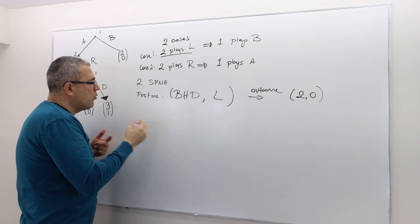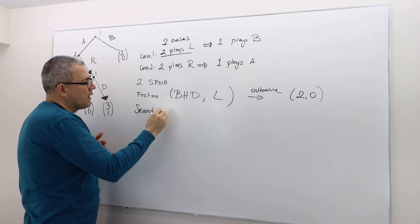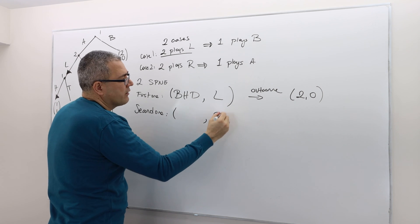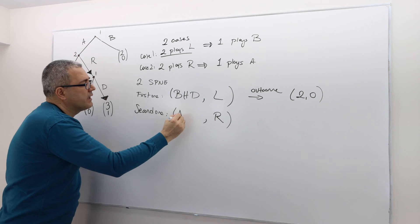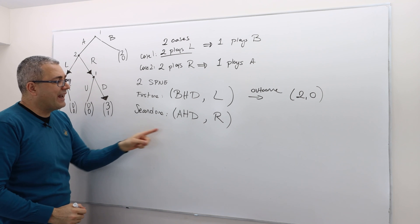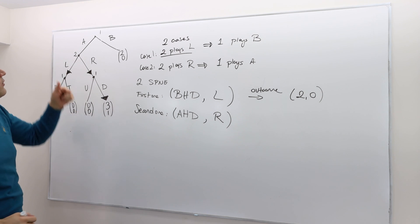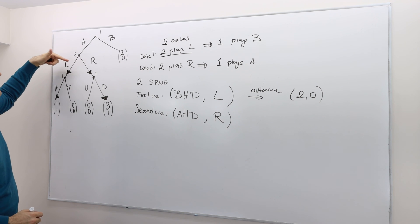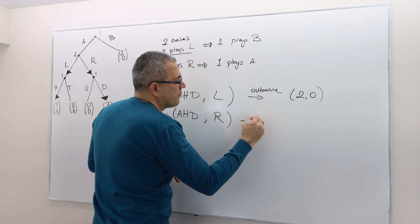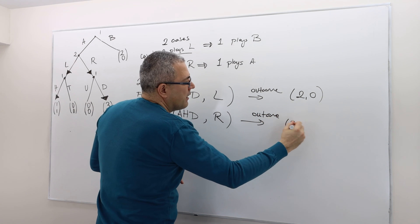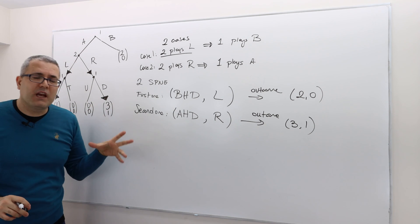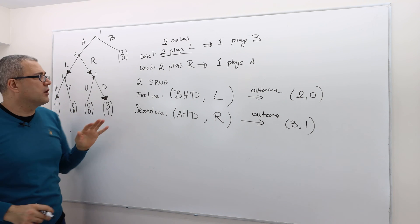The second subgame perfect Nash equilibrium: player one believes his opponent will play right, so player one plays A at the start, then H after AL and D after AR. Player two plays right. The outcome corresponding to this strategy profile is A, then R, then D — so (3, 1). This is how we find all subgame perfect Nash equilibria in pure strategies for a game like this.